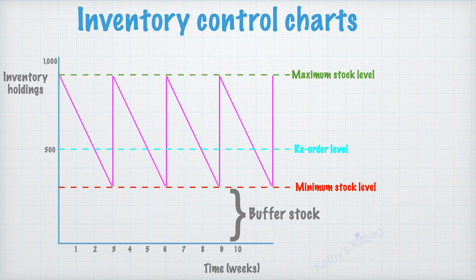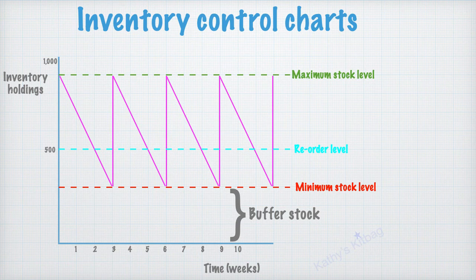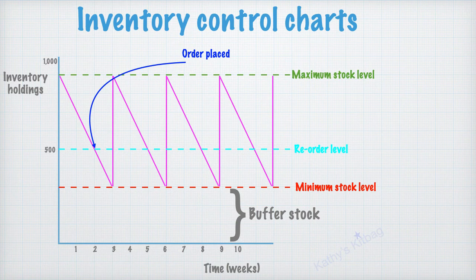And what that is saying is that as the business uses its stock, when it gets to that 500 level, it's going to place an order. So for example, if you look on this particular chart, you can see that the first time they place an order is here at week two.